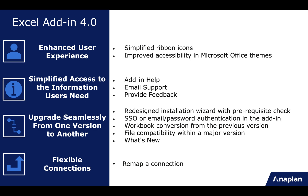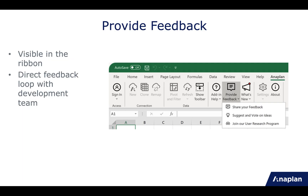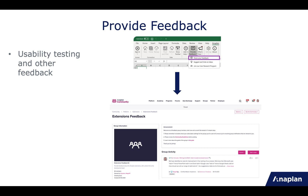Many people have expressed that they wanted to provide feedback, so we've introduced a Provide Feedback button directly in the ribbon in version 4.0, making it super visible for every user. This feedback goes directly to the development team. The first item opens our extensions feedback group on community — if you're not a member, create a community account and request to join. Access is generally approved within a few days. Once you're in, you'll find activities to participate in, such as opinion surveys and usability testing sessions.